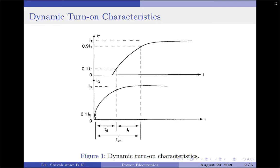In this interval, two time parameters come into picture. The first one is the delay time and the next one is the rise time. The delay time, represented by TD, is defined as the time interval between 10% of the gate current (0.1 IG) and 10% of the thyristor on-state current (0.1 IT). This time interval is called the delay time.